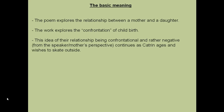So the basic meaning: the poem explores the relationship between the mother and the daughter, which is fairly obvious. The work explores the confrontation of childbirth and their relationship, which goes against the idea you'd expect of a mother in regards to childbirth and their child. This idea of their relationship being confrontational and rather negative from at least the mother's perspective continues as Catrin ages and wishes to skate outside.